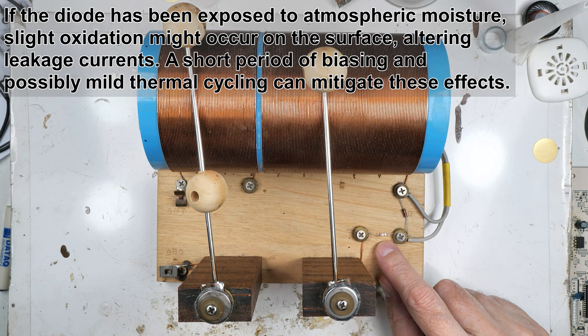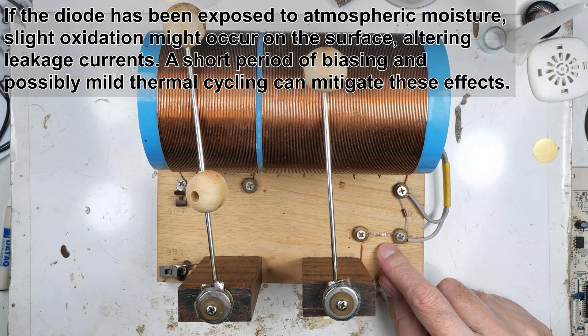Slight oxidation might occur on the surface, altering leakage currents. A short period of biasing and possibly mild thermal cycling can mitigate these effects. Okay, that was another thing.